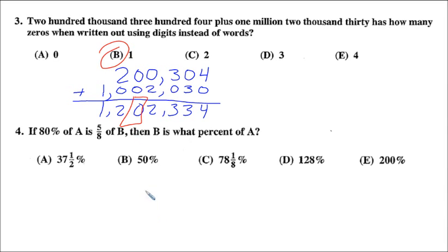4 is another percentage problem, and it really deals with the word of. When you see the word of, it means multiply. 80% of A is 5/8 of B. Let me write out a number sentence. Let me write an equation. It says, it's 80% of A, so 0.8 of means times, so 0.8 times A is, or equals, 5 eighths of B. So, 5 eighths times B.